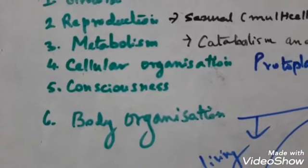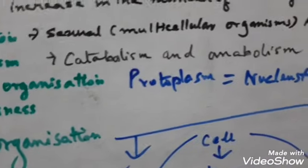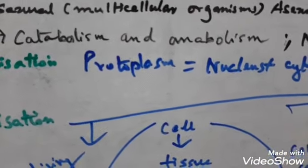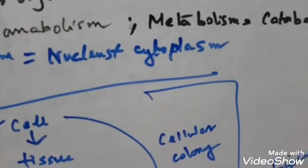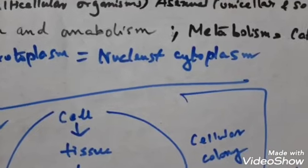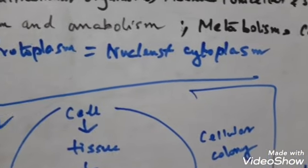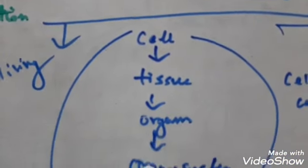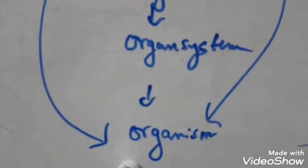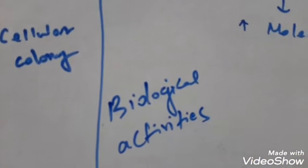Body organization is the next important property. Every living organism is made up of a tiny structural and functional unit called the cell. Within the cell, all organelle activities are going on. Cells aggregate to form a cellular colony in unicellular organisms. In multicellular organisms, cells form tissues, tissues form organs, organs form organ systems, and organ systems comprise the organism.